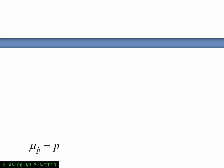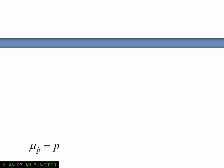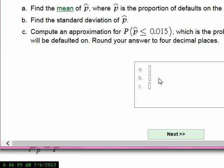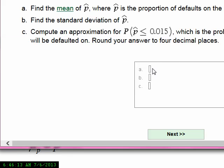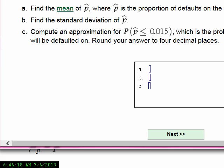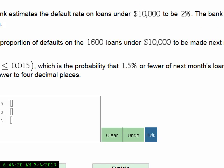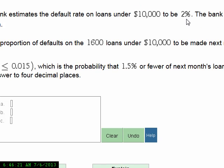Let's go ahead and answer the first question. Find the mean of p-hat — that's just going to be p. And they tell us the default rate is 2%, so the answer is 0.02.